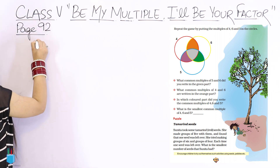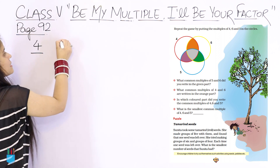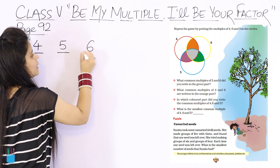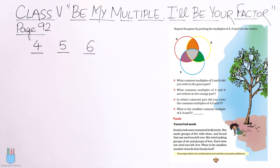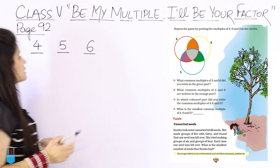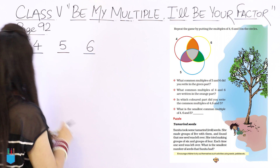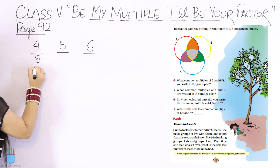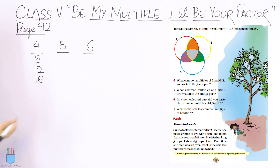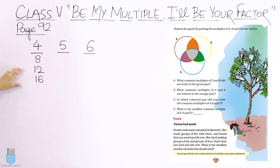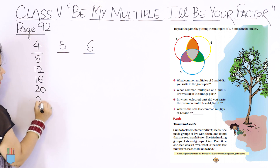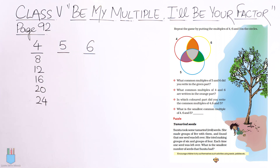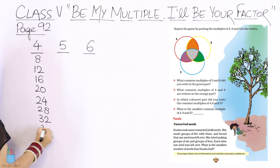What I can simply do is write the multiples of 4, then the multiples of 5, then the multiples of 6. We know that multiples are all the numbers in the table. So for 4: 4, 8, 12, 16, 20, 24, 28, 32, 36, 40.